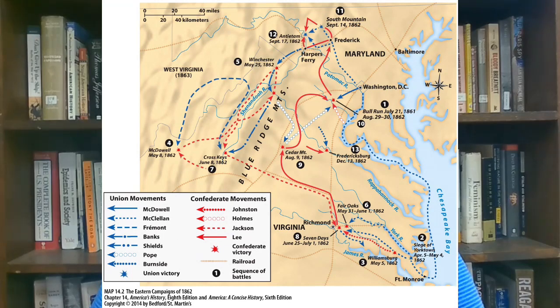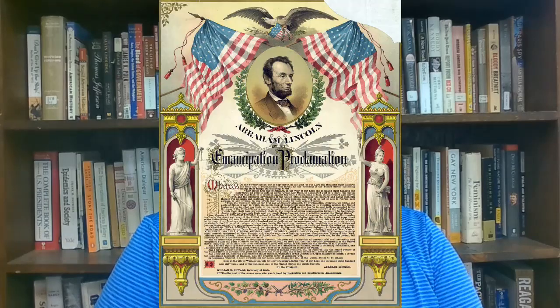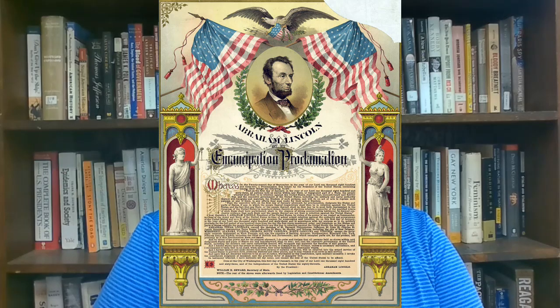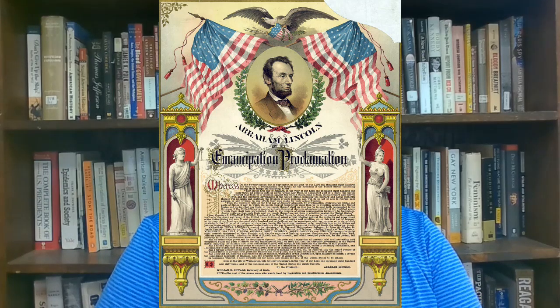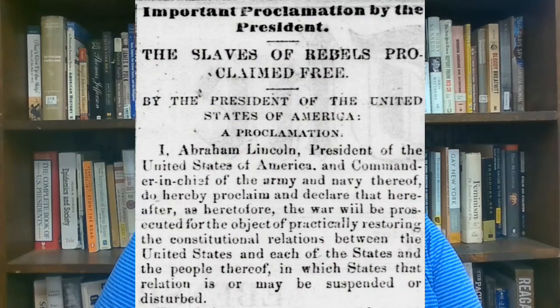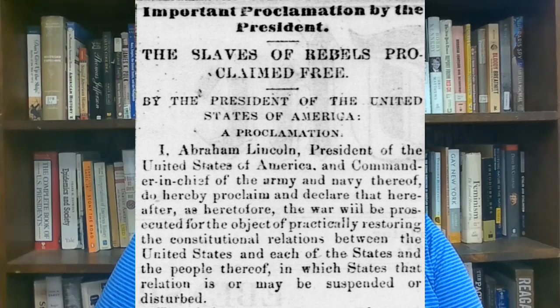However, with a Union victory at Antietam in September of 1862, Lincoln was emboldened to attempt a decisive and risky diplomatic maneuver. In an attempt to align the foreign powers of Britain and France against the Confederacy, Lincoln passed the Emancipation Proclamation in September of 1862, which officially went into effect on January 1st, 1863. This forbade slavery in enemy territories and allowed the Union Army to legally confiscate Southern slaves as enemy property.